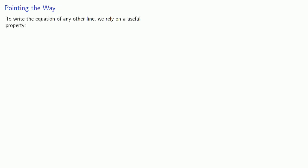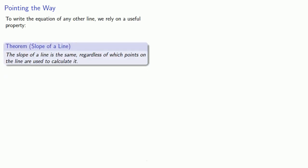What if our line isn't vertical or horizontal? To write the equation of any other line, we'll rely on a useful property: the slope of a line is the same regardless of which points on the line are used to calculate it.